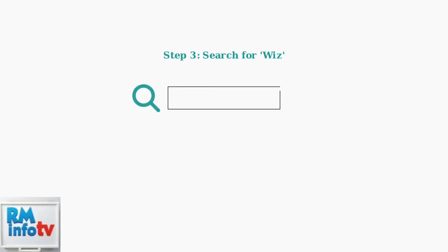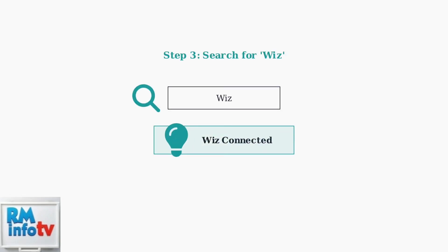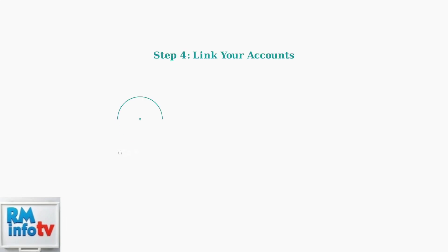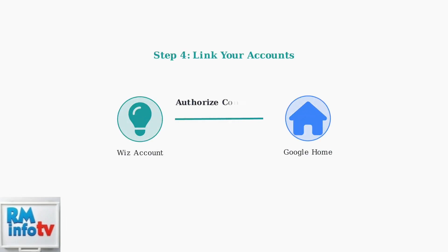In the Works with Google section, search for Wiz to find the WizConnected service. Tap on it to begin the linking process. Follow the prompts to link your Wiz account to Google Home. You'll need to authorize Google to access and control your Wizlights.